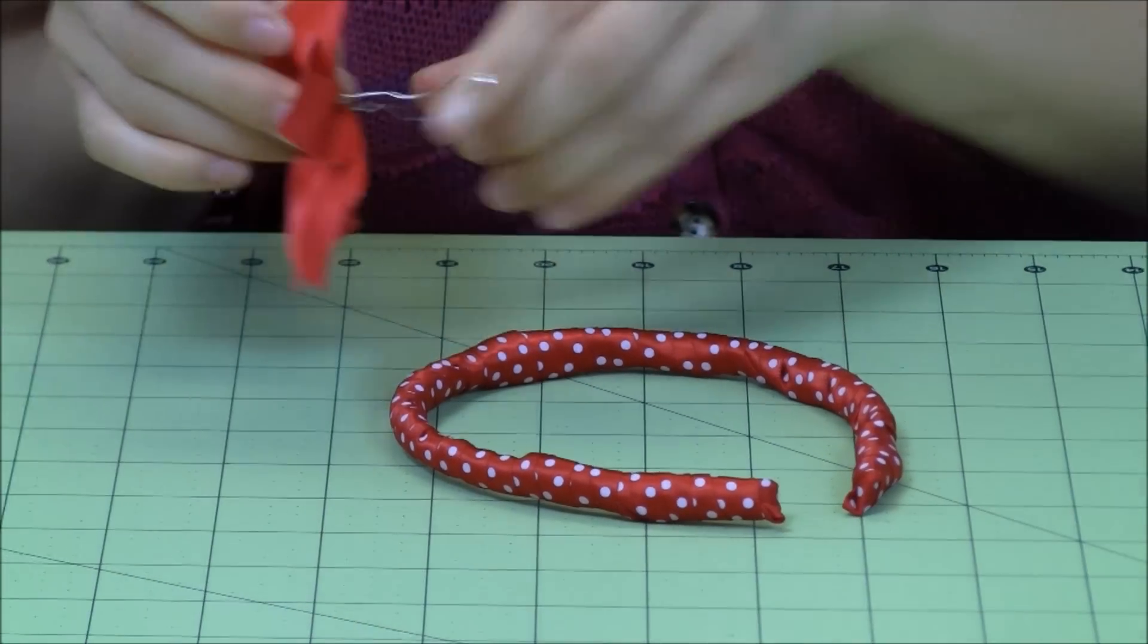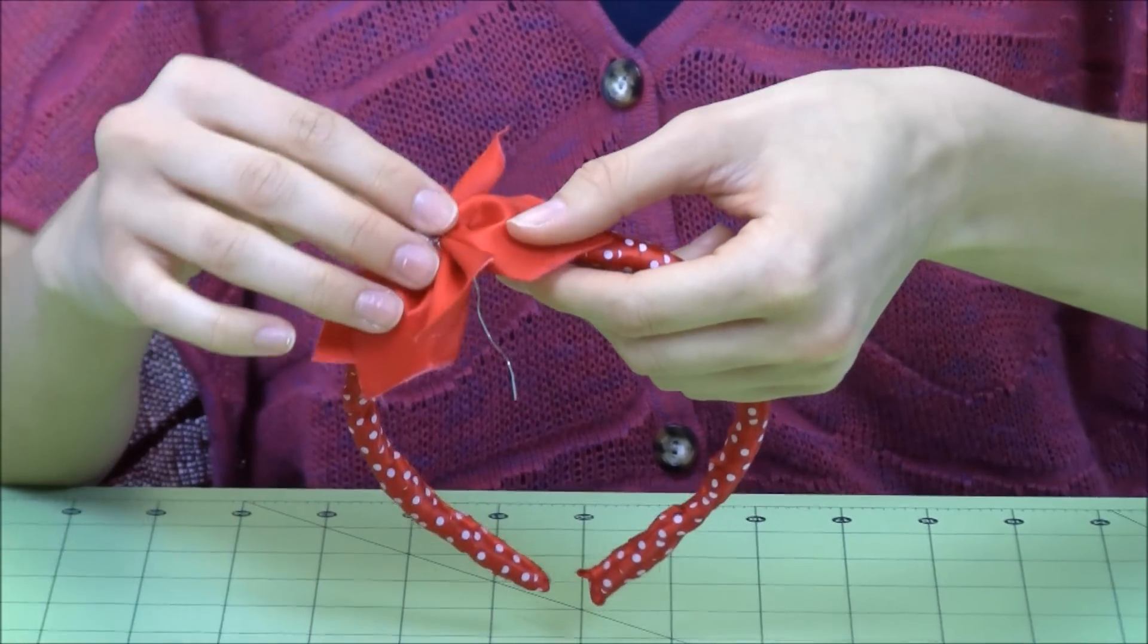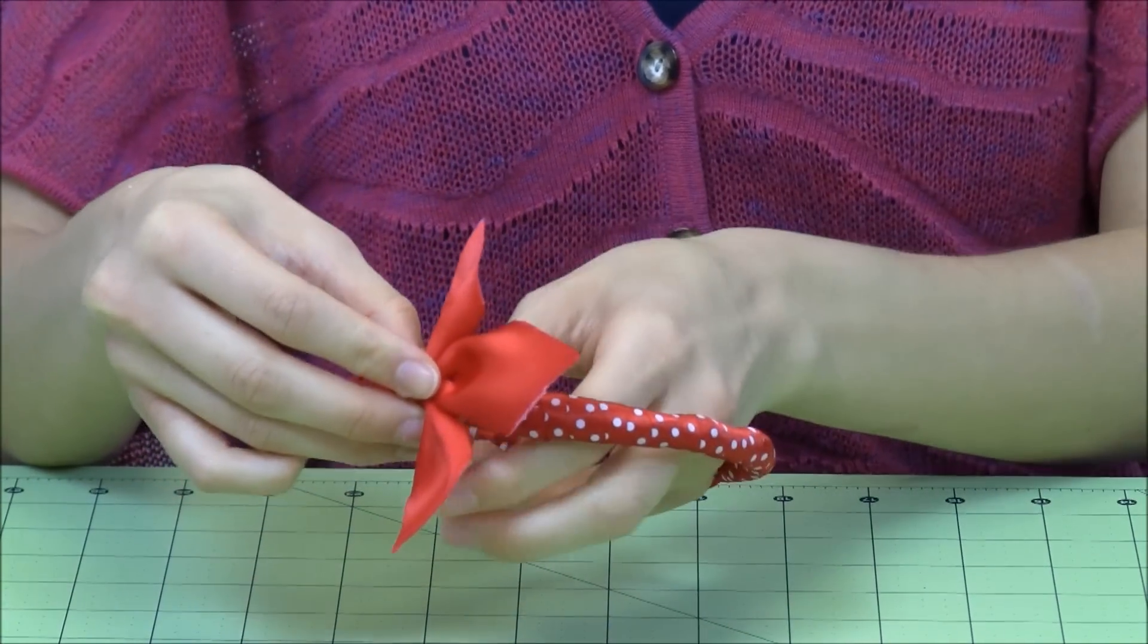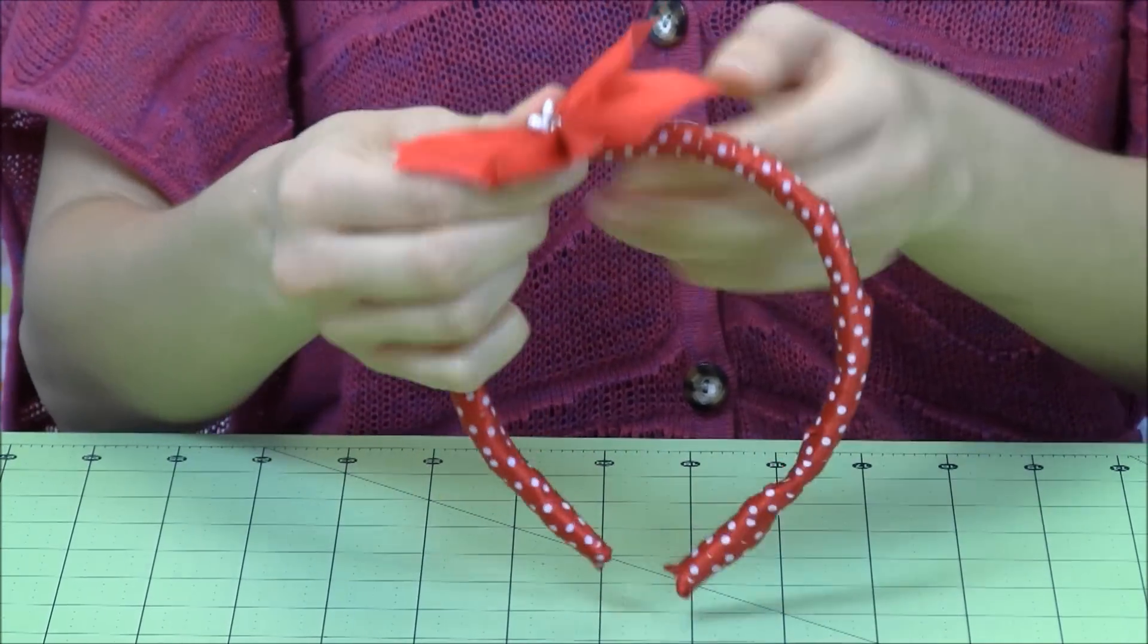So I'm just going to go ahead and use this to secure it around my headband. I'm going to do it kind of to the side here, but then also so our petal covers up where I stopped our ribbon part way through. And we can just use this to twist around.